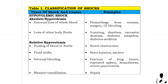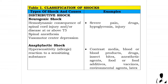Hypovolemic shock — absolute hypovolemia: external loss of whole blood from hemorrhage due to trauma, surgery, and gastrointestinal bleeding; loss of other body fluids from vomiting, diarrhea, diabetes insipidus, and diabetes mellitus. Relative hypovolemia: pooling of blood or fluids such as bowel obstruction; fluid shifts from burn injuries; internal bleeding from fracture of long bones, ruptured spleen, hemothorax, and severe pancreatitis; and massive vasodilation from sepsis.